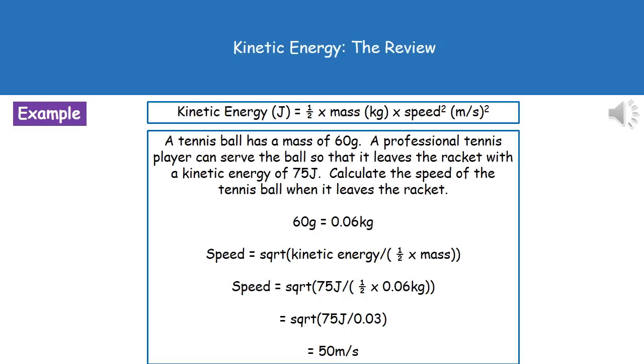Then what we need to do is put our numbers into our rearranged equation. Our speed equals the square root of the kinetic energy, which is 75 joules, divided by half times the mass, 0.06 kilograms. If we simplify that down a little bit by starting with our brackets there, half times 0.06 gives us 0.03. We need to do the square root of 75 divided by 0.03, which gives us our final answer there of 50 meters per second.